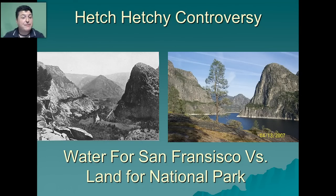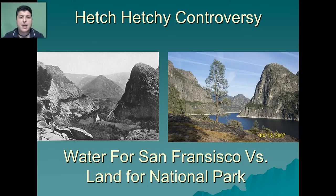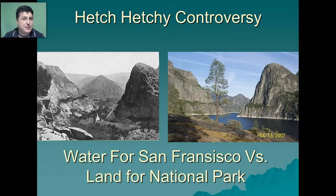The split between the preservationists and the conservationists can be best illustrated by the Hetch Hetchy controversy. In 1901, conservationists wanted to use Hetch Hetchy Valley as a reservoir for water for the people of San Francisco by damming the valley and flooding it. The preservationists, headed by John Muir, wanted to preserve the valley as a national park for future generations to enjoy. After a twelve-year bitter battle, the conservationists won and the valley was flooded. Interestingly, the controversy still continues today as preservationists seek to remove the dam to restore Hetch Hetchy Valley and name it a national park.